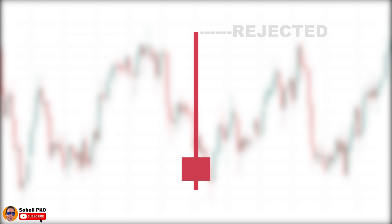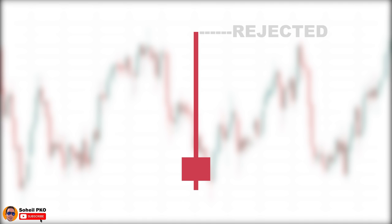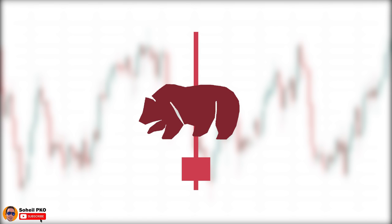This candle shows that buyers rejected these high prices — they saw it as expensive. So the buying interest diminished at these high prices and on the other hand, sellers saw it as a good deal and started selling. This candle actually shows how the balance of power changed and shifted from bulls to bears and how the bears became the winner in that time period. This candle is generally considered bearish and it shows the possibility that the price is going to decline more.